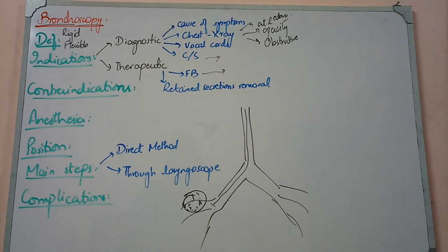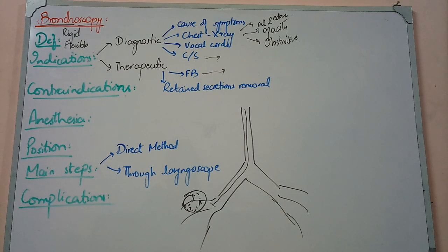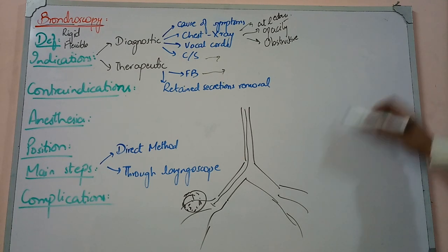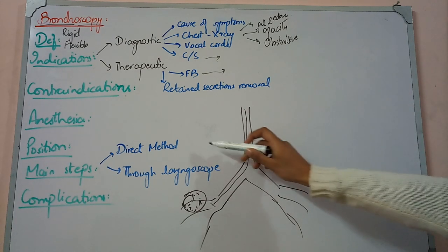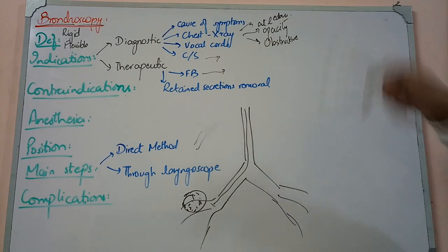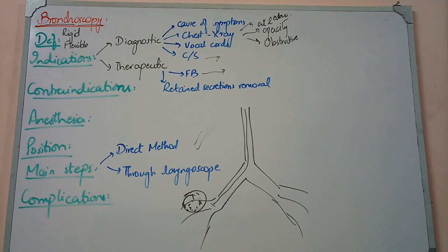There are very specific contraindications but they don't need detailed mention. In general anesthesia, we do it with a small tube. In the main steps, there are two methods: one is to directly introduce the bronchoscope, and sometimes you use the laryngoscope first and then pass the bronchoscope through. You adopt these two methods as the main technique.